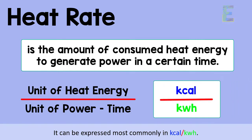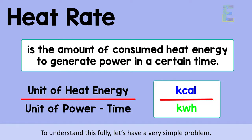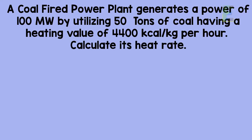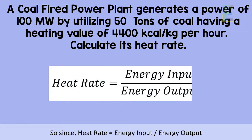It can be expressed most commonly in kilocalories per kilowatt hour. To understand this fully, let's have a very simple problem. A coal-fired power plant generates a power of 100 megawatts by utilizing 50 tons of coal having a heating value of 4400 kilocalories per kilogram per hour. Now, calculate its heat rate.